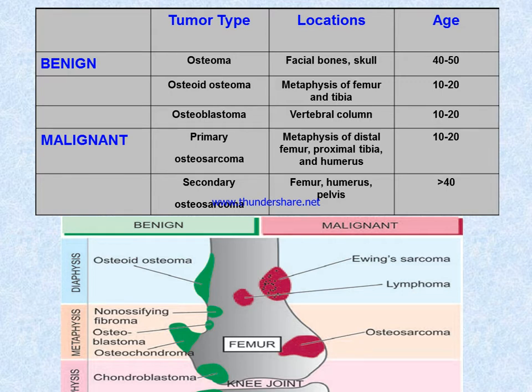The location of osteoma is the facial bones and skull, with an age range of 40 to 50. In the case of osteoid osteoma, it is located at the metaphysis of the femur and tibia, age range 10 to 20. Osteoblastoma is located at the vertebral column, age range 10 to 20.